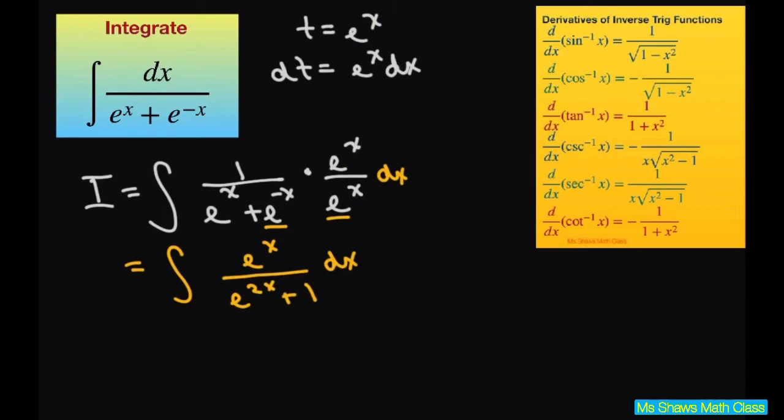Now substituting in we're going to get our integral equals dt divided by t squared. Remember this can be written as e to the x squared. We have t squared plus 1.